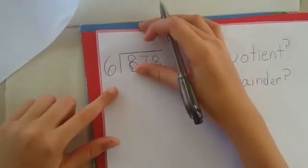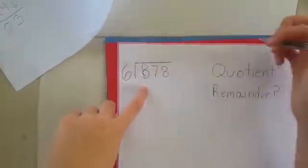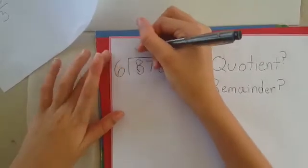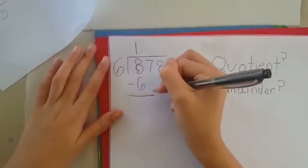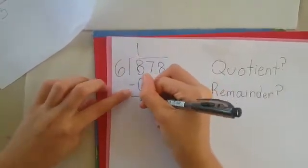The division, what we have to do first is find a number that multiplied by six, its quotient is eight or close to eight. So six times one is close to eight. Six minus eight minus six is two.